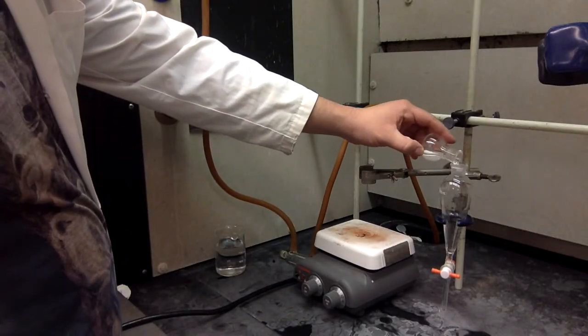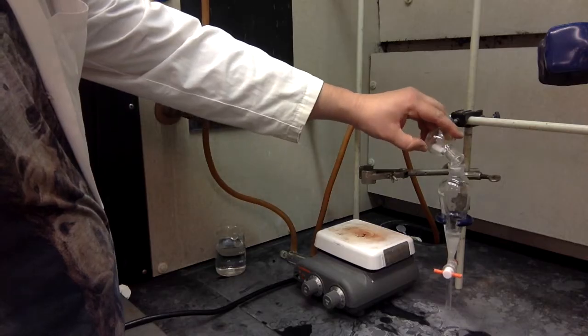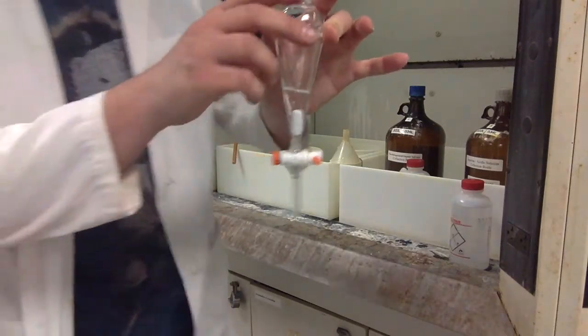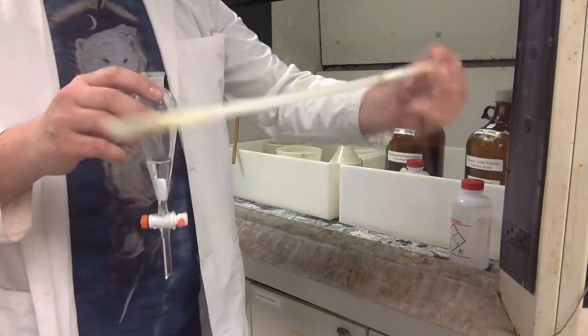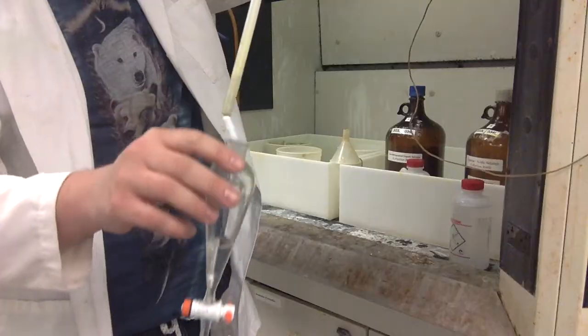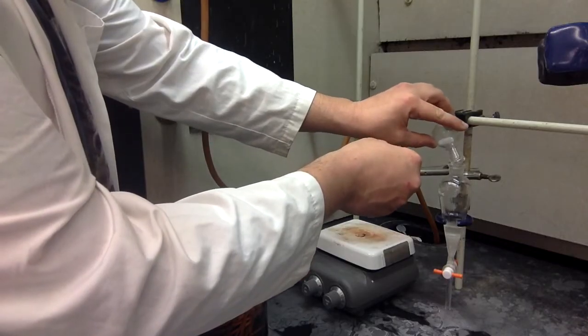You can see me decanting the reaction solution into the separatory funnel. Notice I'm using a pipette to stop the stir bar from falling in. If your stir bar does fall into the separatory funnel, don't fret too much. All you have to do is come to the waste hood, and there is a magnet on a stick that will help you pull it out. Just like that. Rinse the round bottom with a little bit more ether, add it to the rest.